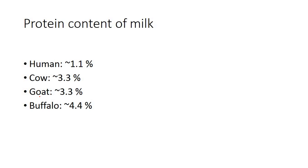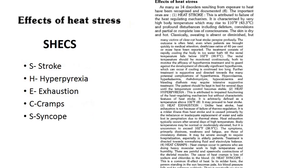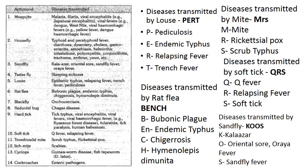Protein content in milk: human milk has 1.1%, cow's and goat's milk have about 3.3% (three times human milk), and buffalo's milk has 4.4%. For effects of heat stress, the mnemonic is CHECKS: Heat stroke, Heat Hyperpyrexia, hEat Exhaustion, Heat Cramps, Heat Syncope — Stroke, Hyperpyrexia, Exhaustion, Cramps, Syncope.